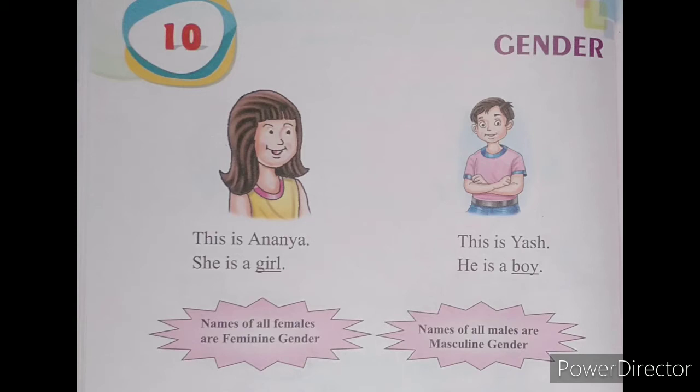So we can conclude and understand that names of all females are called feminine gender. Now let us see the second sentence.